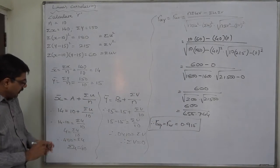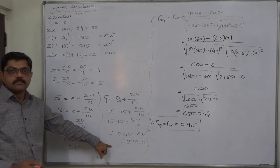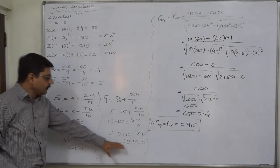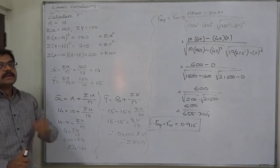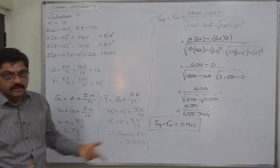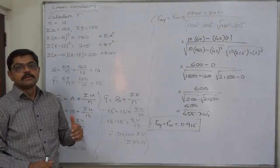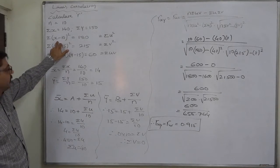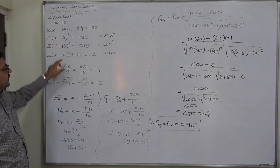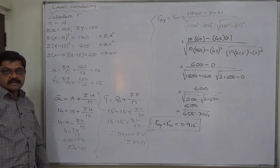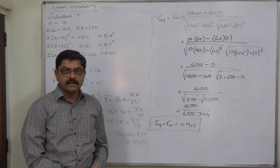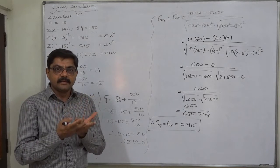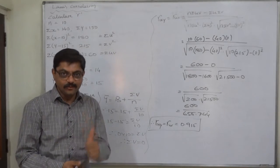The important takeaway is how to find σu and σv from the available information — that is the main point of this problem. This problem can also be solved another way — by opening the brackets to find σx², σy², and σxy — but that is a lengthier technique, which I don't recommend here. We will discuss that technique in the next lecture. Thank you very much.